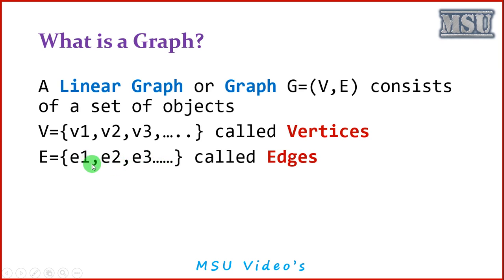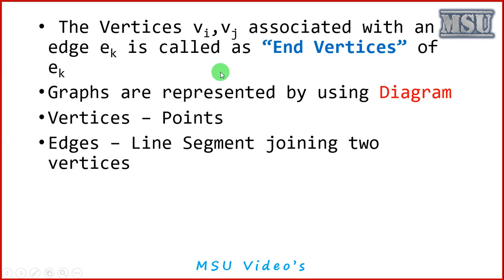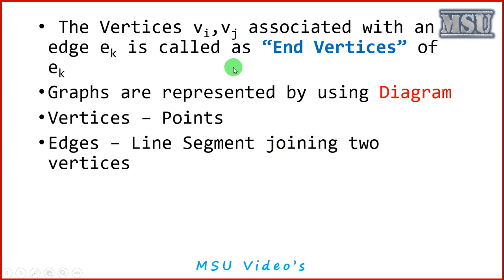The vertices Vi and Vj associated with an edge Ek are called the end vertices of Ek. An edge is connected by using two different vertices — that is what we call the end vertices.